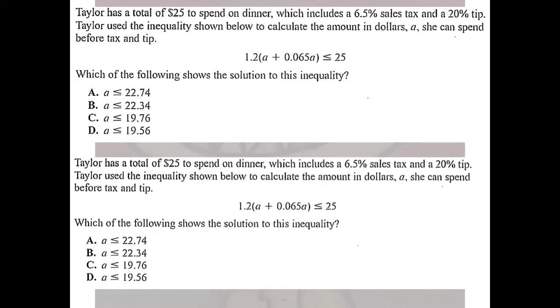All right so we have two problems that are exactly the same. I bet we can get the same answer each. Not sure why I copied that one twice but it happens. All right and luckily you know you cut through some of the stuff that gives you an equation. A is the amount you can spend before tax and tip. Which of the following shows the solution to this inequality so we're just trying to solve this. Well inequalities are solved a lot like equations in that if you have a number outside parentheses we're going to distribute it.